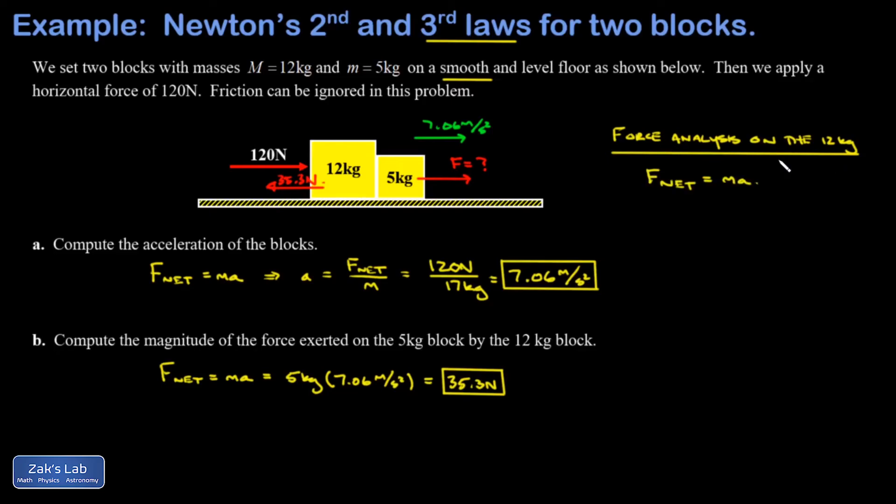And using the convention that rightward is positive, the net force on that 12-kilogram block is 120 newtons to the right minus 35.3 newtons to the left. The mass of that block is 12 kilograms.